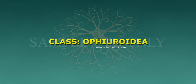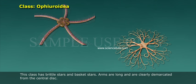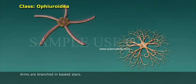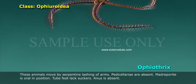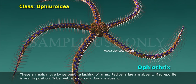Class Ophiuroidea. This class has brittle stars and basket stars. Arms are long and are clearly demarcated from the central disc; arms are branched in basket stars. These animals move by serpentine lashing of arms. Pedicellariae are absent.